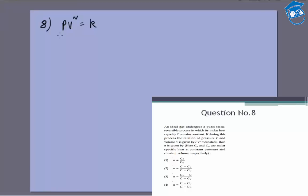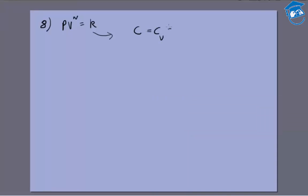So one relation which some of you might have remembered already is that in a process like this, the molar heat capacity is given as CV plus R by 1 minus n. If you don't know this, let me just derive it. It is a little bit mathematical so I'll not write the whole steps, just tell you where it comes from.